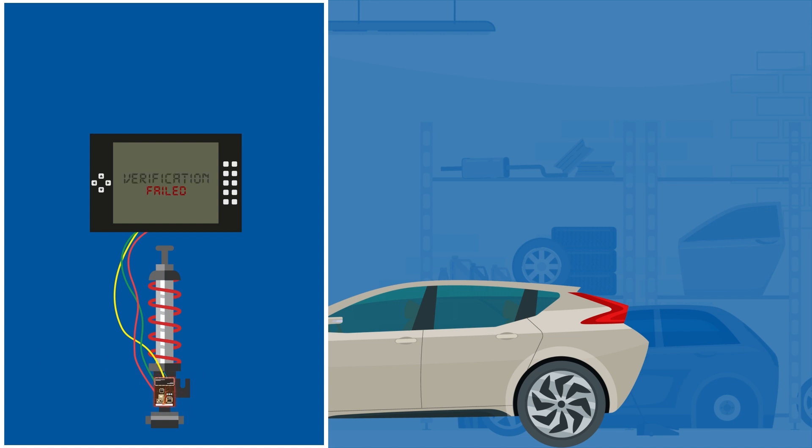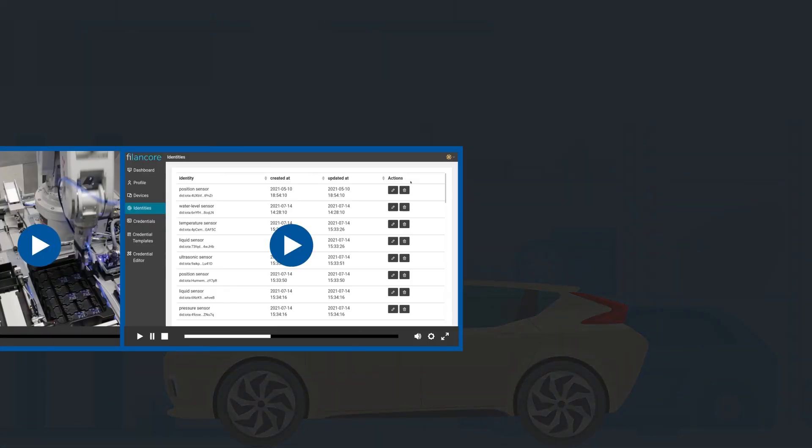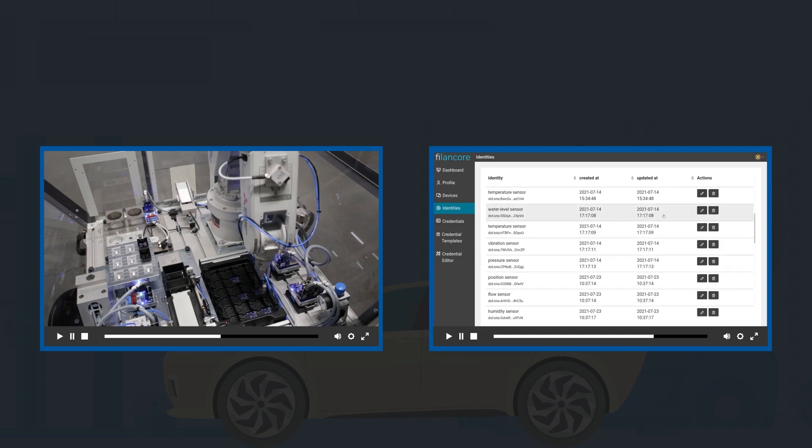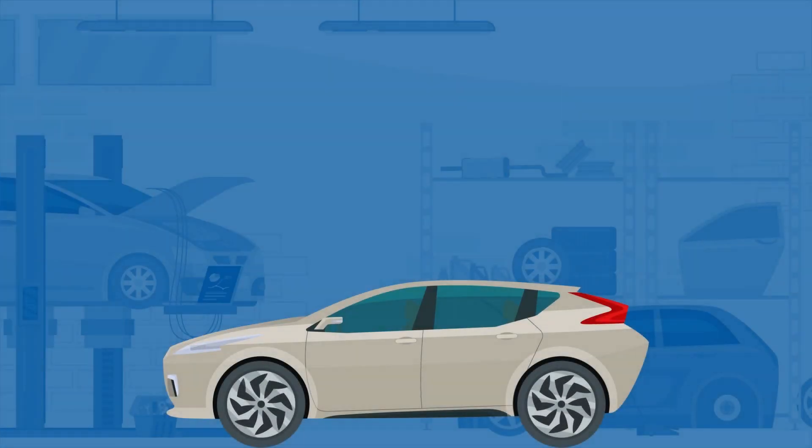However, if a forgery is detected, appropriate measures can be taken by the control unit. For example, the change to a secured operating mode. The manufacturer gets an overview of all registered products, their properties and relevant events in the life cycle.